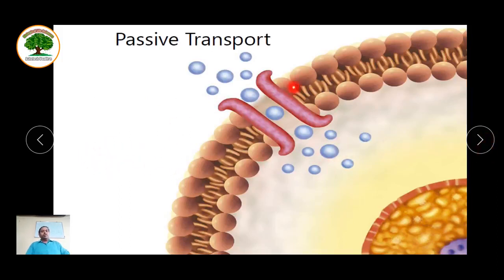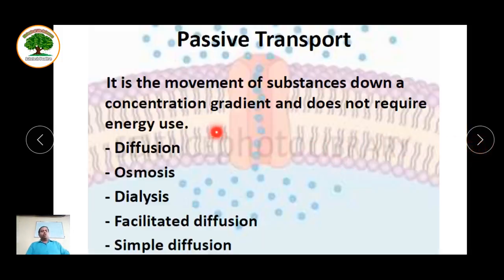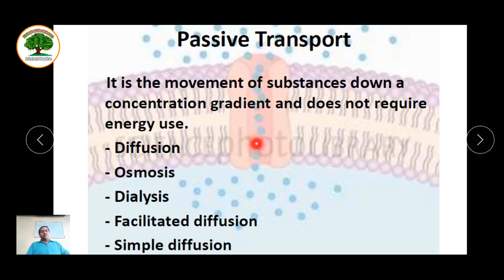There are different types of transport helped by the cell membrane. The first is passive transport — a transport in which no energy is required. Transfer of solutes, ions, or molecules takes place through the membrane based on concentration difference, that is, diffusion. The different phenomena that help in passive transport are diffusion, osmosis, dialysis, facilitated diffusion, and simple diffusion.